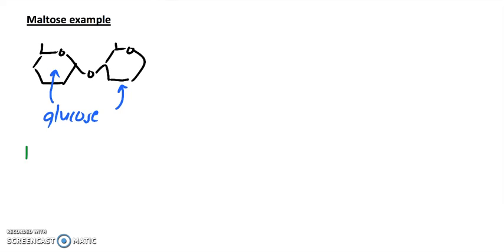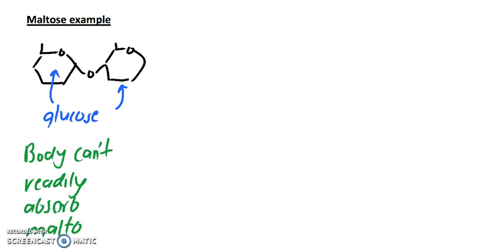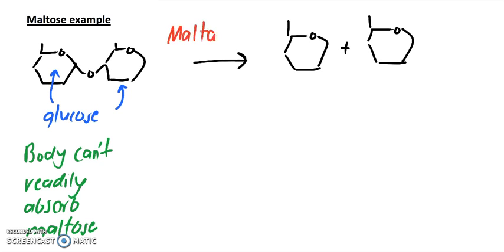Now our body can't readily absorb maltose. Your body can't readily absorb maltose. We need to chop it up into its glucose pieces, chop it up into individual tinier smaller pieces of glucose. So we can do that with an enzyme and the appropriate enzyme here is called maltase. So we gave it a pretty good name, and many enzymes end with this suffix -ase.